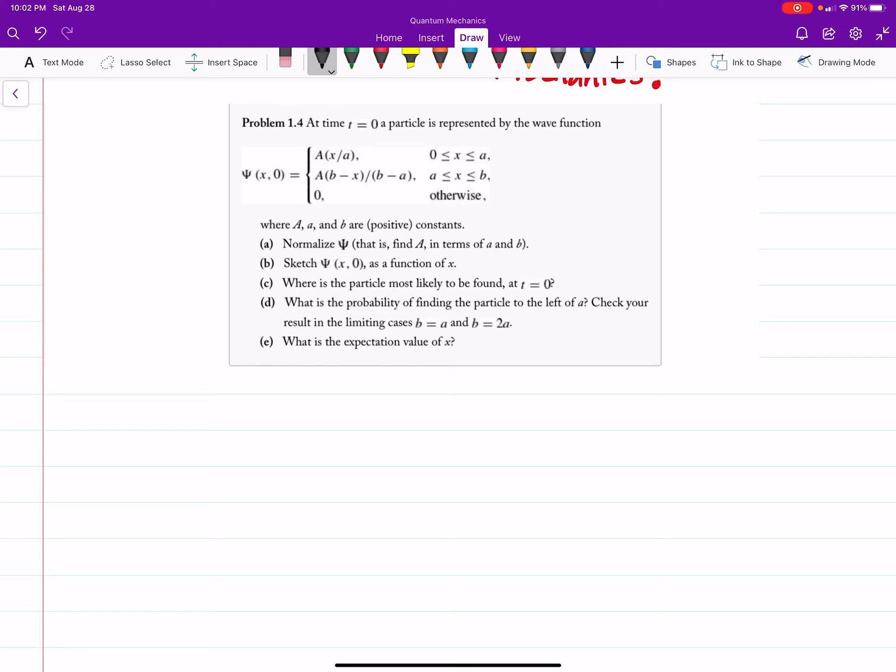So we have our wave function, and it's defined as either A times x over a, notice the difference in a on this interval, A times (b minus x) all divided by (b minus a) on that interval, and 0 everywhere else. Where capital A, little a, and little b are positive constants.